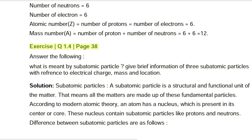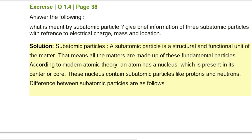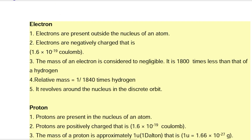Exercise Q1.4, page 38. What is meant by a subatomic particle? Give brief information of three subatomic particles with reference to electrical charge, mass, and location. Solution: A subatomic particle is a structural and functional unit of matter — all matter is made up of these fundamental particles. According to modern atomic theory, an atom has a nucleus present at its center or core, which contains subatomic particles like protons and neutrons.